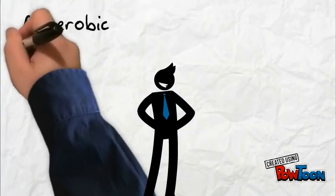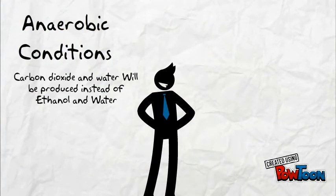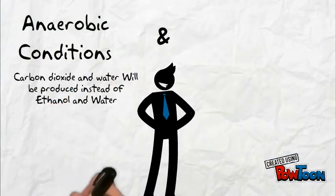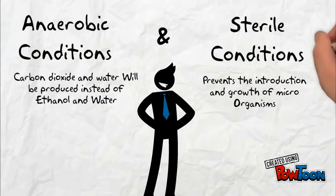Anaerobic conditions are also required; without them, yeast will respire aerobically to produce carbon dioxide and water instead of ethanol and carbon dioxide. Additionally, sterile conditions are needed in order to prevent the introduction and growth of unwanted microorganisms.